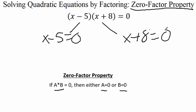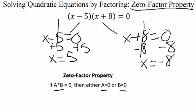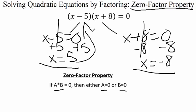We set both factors equal to zero and solve these one-step equations. On the left-hand side, x minus five equals zero — add five to both sides, negative five plus five cancels, giving us x equals five. On the right-hand side, subtract eight from both sides — eight minus eight cancels, and we get x equals negative eight. These are our two solutions: plugging in five or negative eight makes the factors equal to zero, making the equation true.